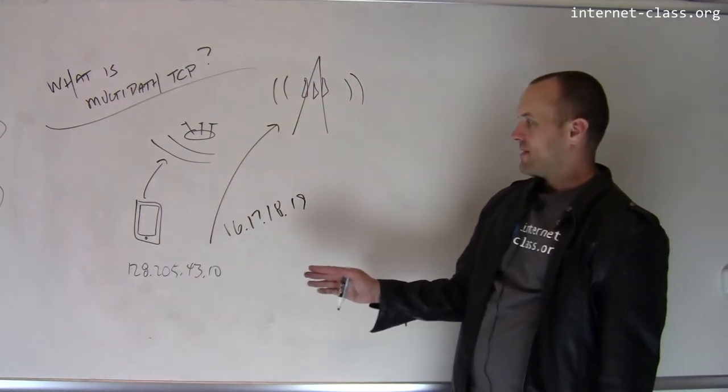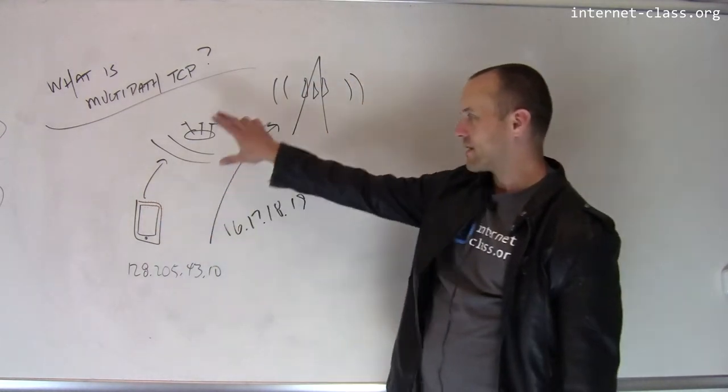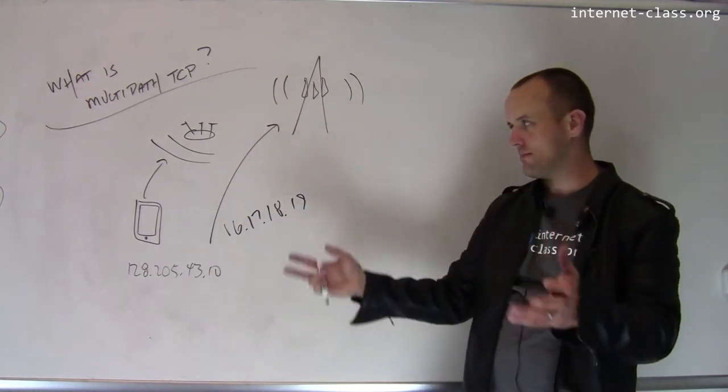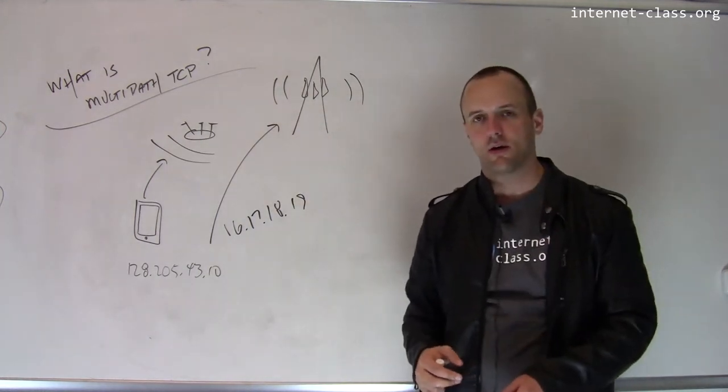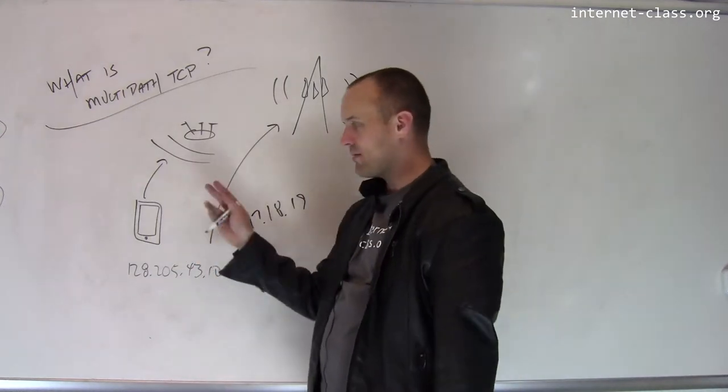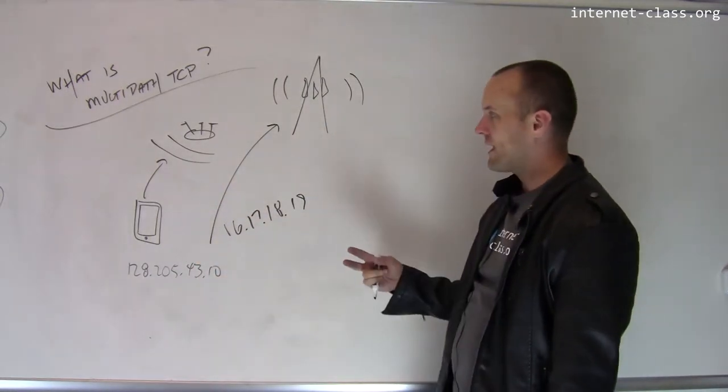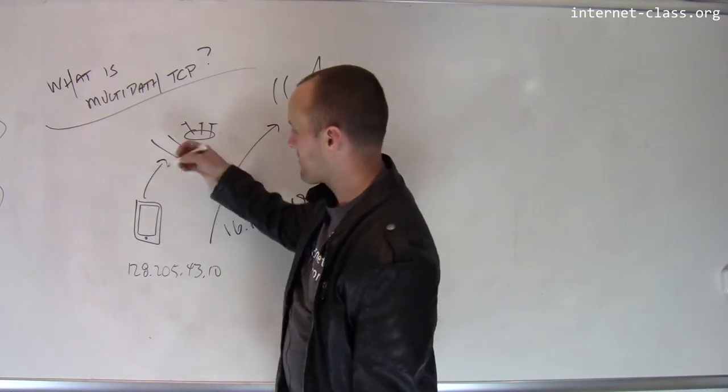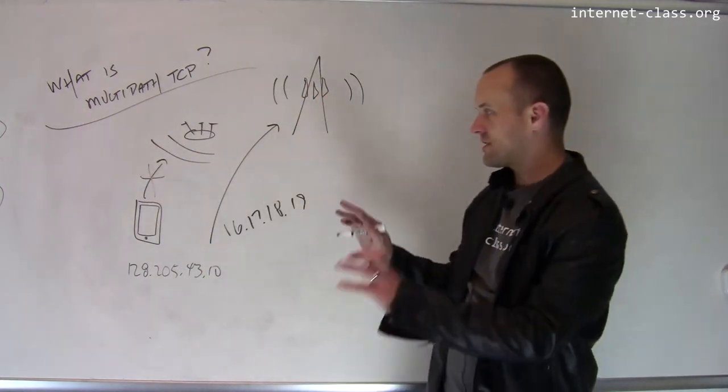And normally what happens is, let's say you're inside, you're connected to the Wi-Fi network, you're streaming some music. So you're streaming music, you're listening, you're happy. You walk outside and this connection drops. So that connection is gone.